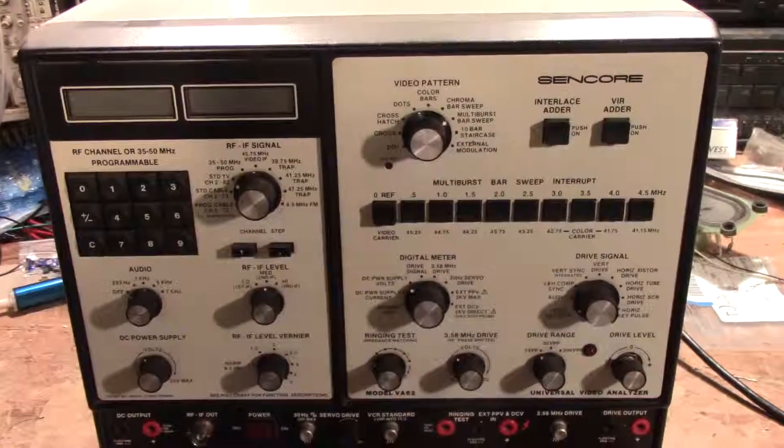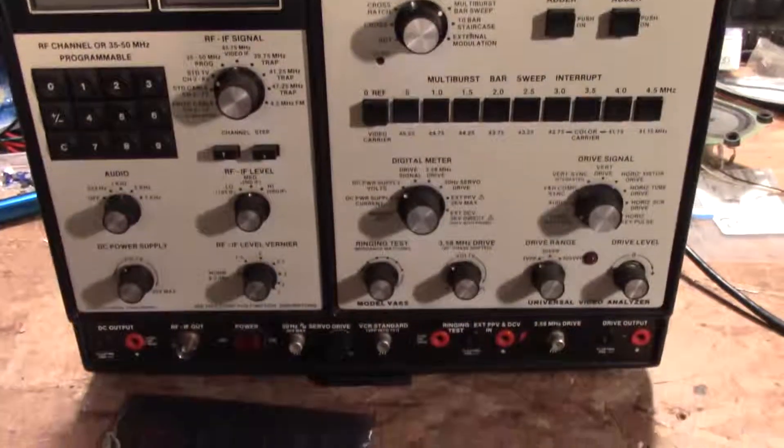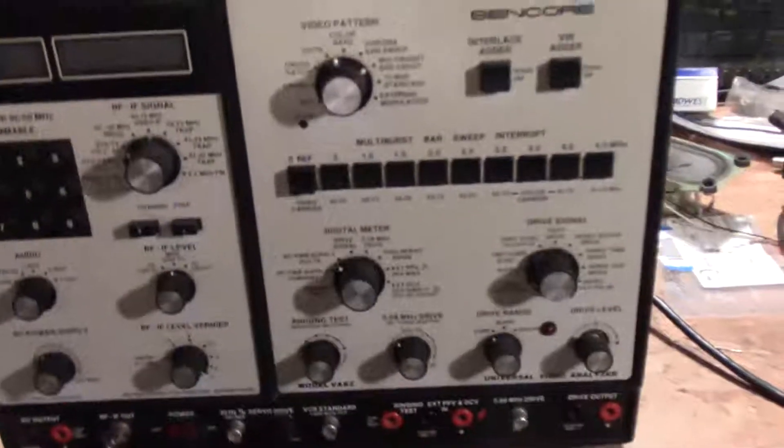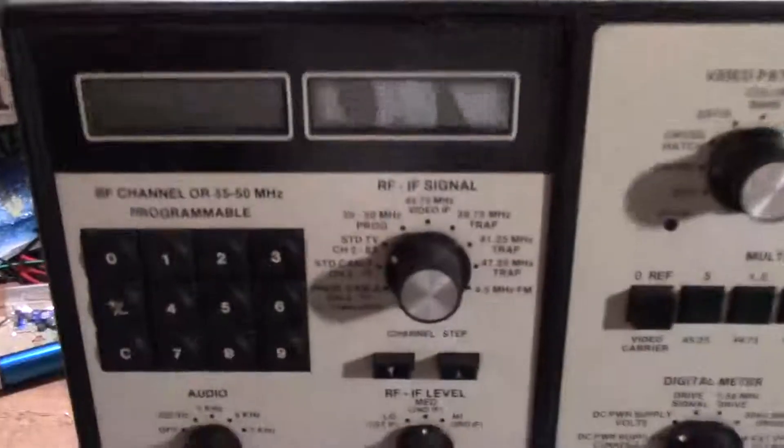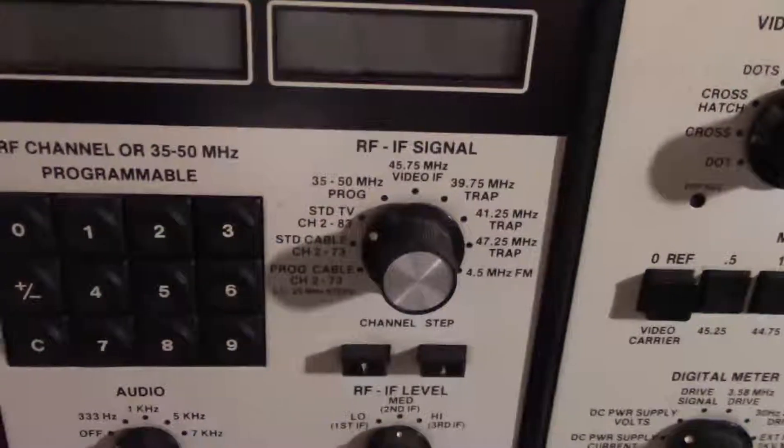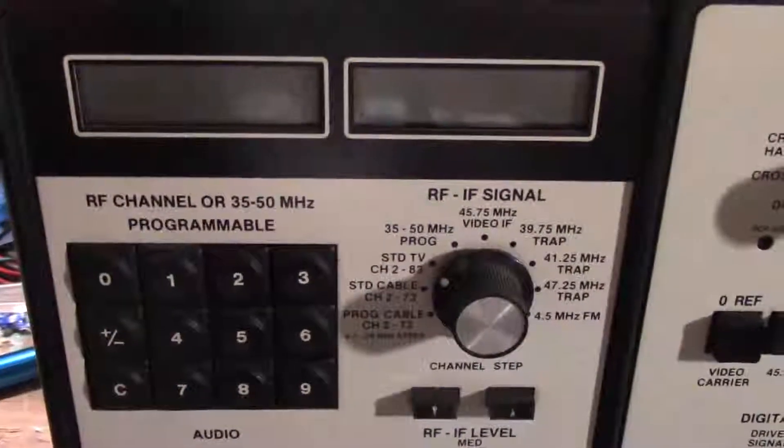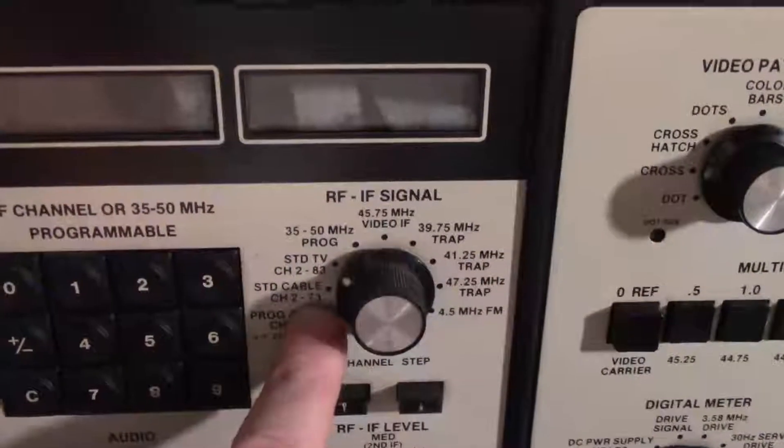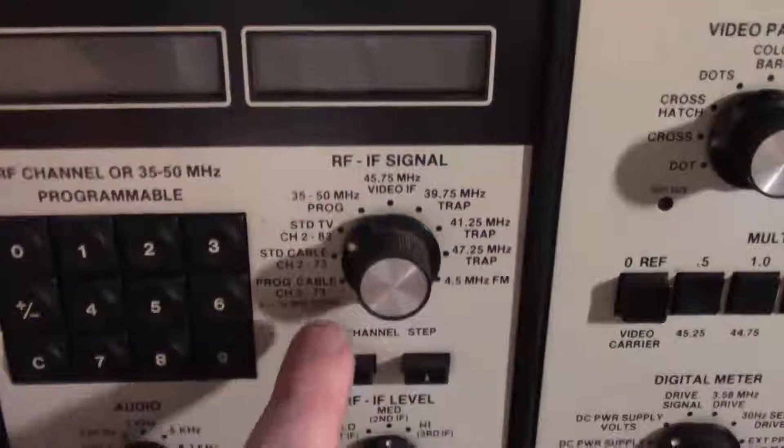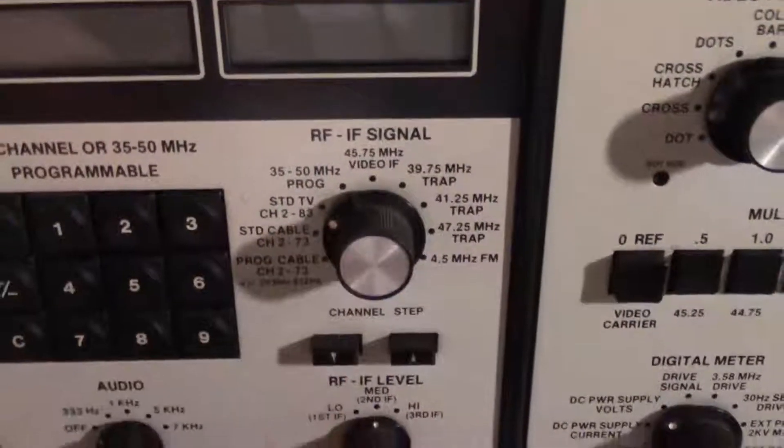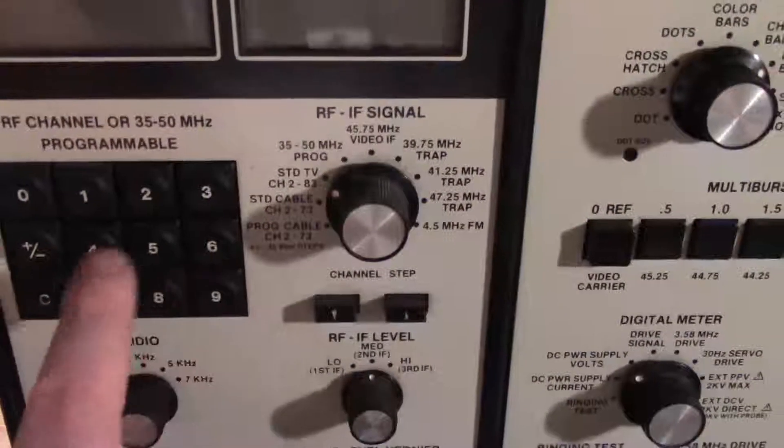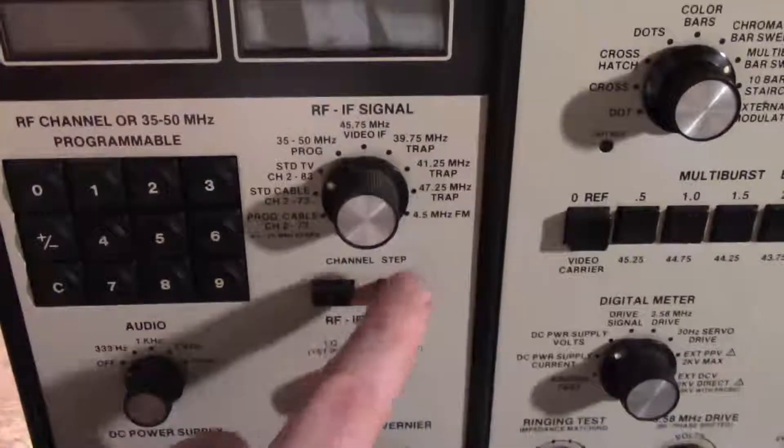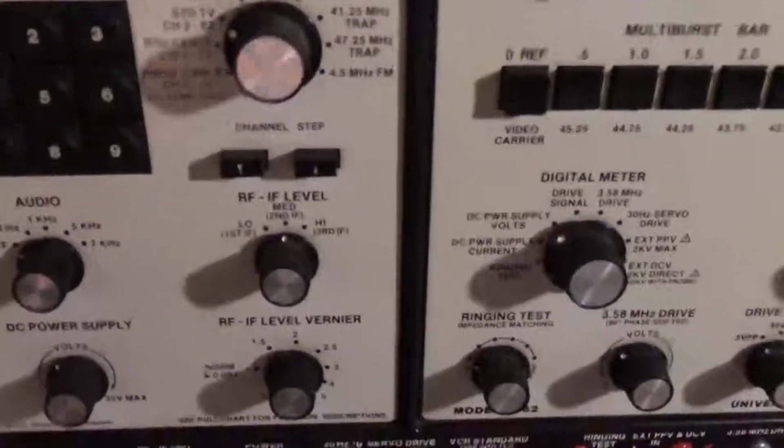Here is my Sencor VA62 video generator, quite a useful device. Has a lot of outputs, standard TV channels for just testing your tuner, cable as well. You just enter it in direct here on the keypad, you just have channel steps up and down.